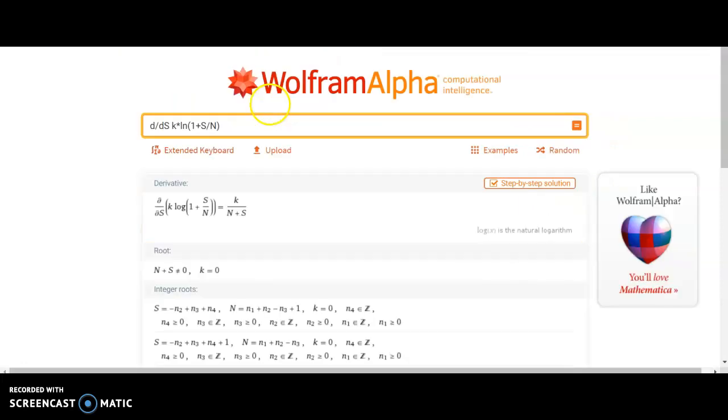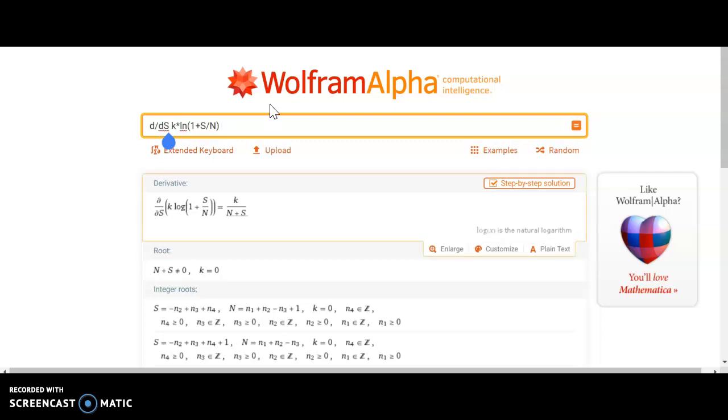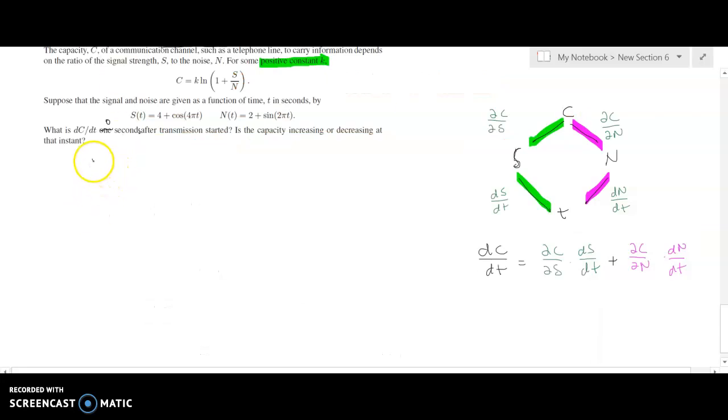So to do this in Wolfram Alpha, first of all, here's our function. This is c right here. And so c is k times ln, 1 plus s over n. And I need to specify which partial I want. So because I want d/ds, I want the derivative with respect to s first. I just type d/ds. And here is the output. So it's telling me that the partial of c with respect to s is k over n plus s. So we can come back here and we can write down dc/ds is equal to k over n plus s.